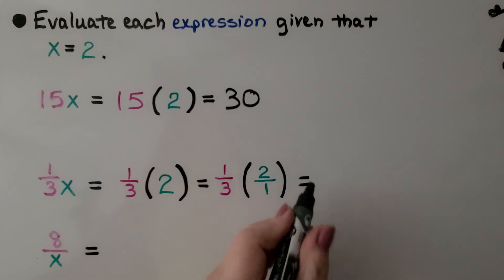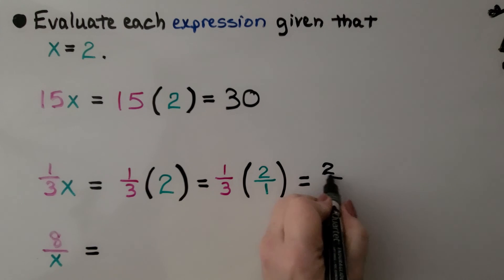We have 1 times 2 for our numerator, and we have 3 times 1 for our denominator. It's equal to 2 thirds.